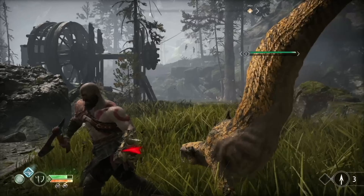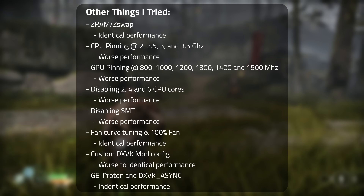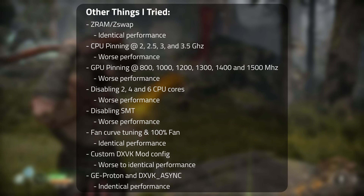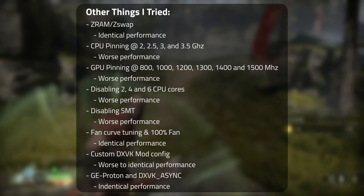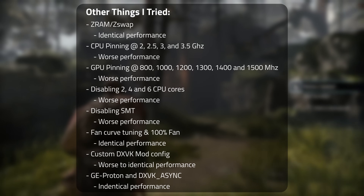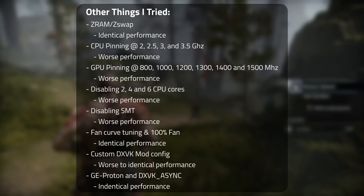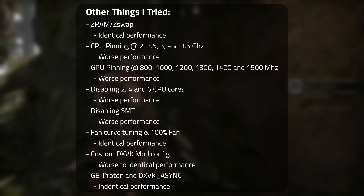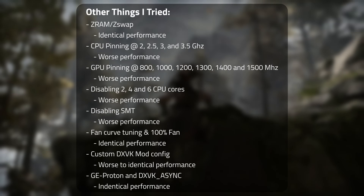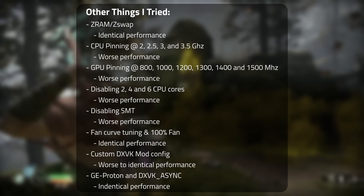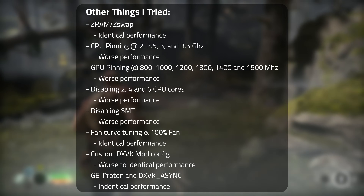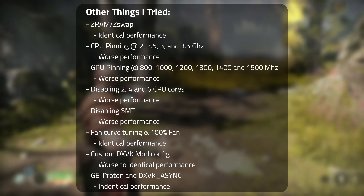As usual, here's a list of things I tried but didn't do any good. Z-RAM and Z-Swap had identical performance. CPU pinning at 2, 2.5, 3, and 3.5 GHz had worse performance. GPU pinning at 800, 1000, 1200, 1300, 1400, and 1500 MHz had worse performance. Disabling 2, 4, and 6 CPU cores had worse performance. Disabling SMT had worse performance. Fan curve tuning and setting the fan to 100% had identical performance. I used a custom DXVK mod config and that had worse to identical performance. And using GE Proton and DXVK Async led to identical performance.